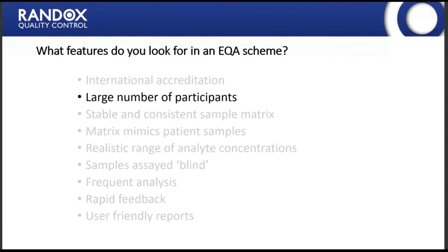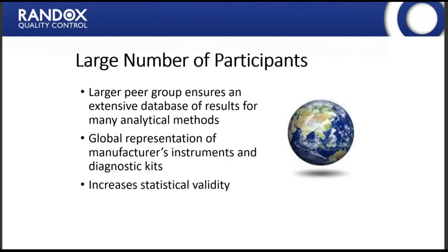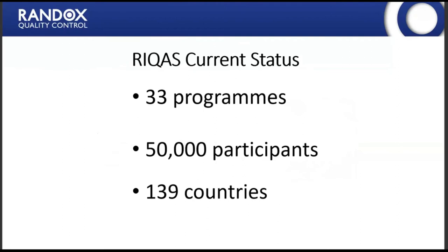A large number of participants is important because it ensures an extensive database of results for many different analytical methods, gives a global representation of manufacturers, instruments and diagnostic kits, and increases statistical validity. If only a small number of people are participating, you can't be sure the statistics are robust. RICUS currently has 33 different programmes, over 50,000 participants, and is active in 139 countries throughout the world.